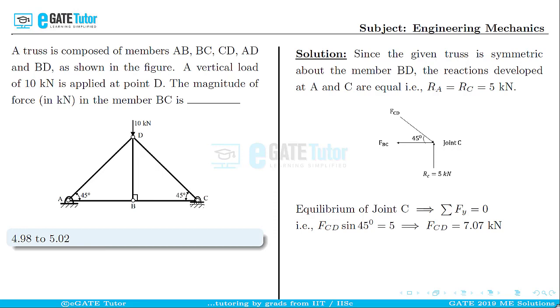Similarly, at joint C, now applying that the sum of all horizontal forces is equal to zero, or ΣFx = 0. Doing that will give us FBC = FCD cos 45°. Since we know FCD = 7.07 kN and cos 45° = 0.707, simplifying that will give us the force in member BC as 5 kN.